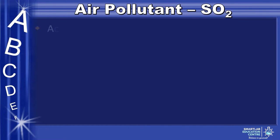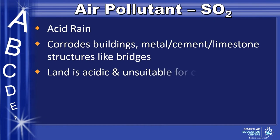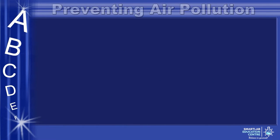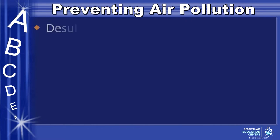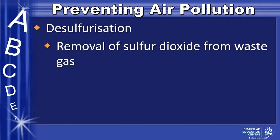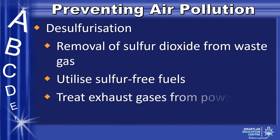The acid rain that is formed can corrode building surfaces, metal, cement, or limestone structures like bridges. Due to land being acidic, it will be unsuitable for crops, and since water is now acidic, it will kill fish. In order to prevent air pollution by sulfur dioxide, desulfurization can occur, where we can remove sulfur dioxide from waste gas, utilize sulfur-free fuels, and also treat exhaust gases from power stations with limestone.